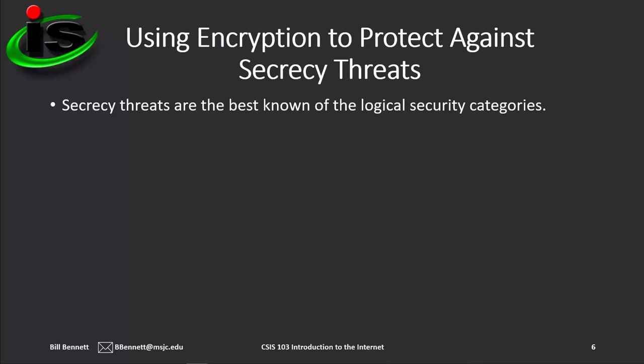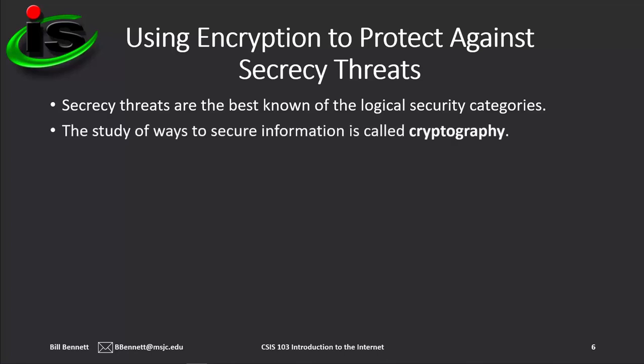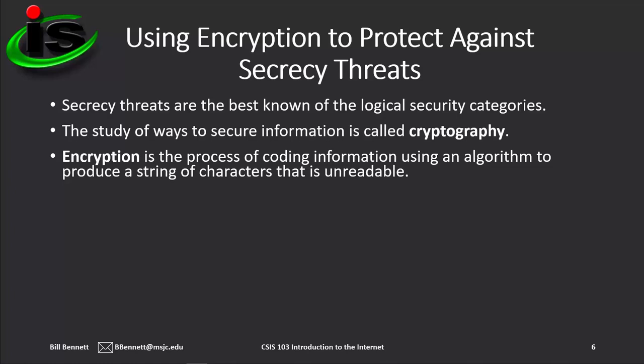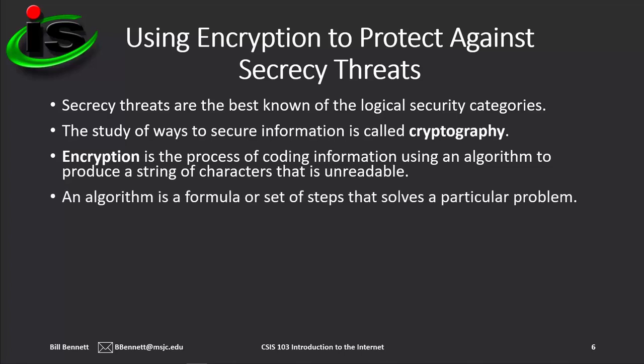Secrecy threats are the best known of the logical security categories. Maintaining the secrecy of communication has been a challenge throughout history. To verify the contents of a private message, the recipient needs proof that it was not altered or intercepted during transit. The sender needs proof that the message was delivered to the intended recipient. These standards apply to all forms of messages, including those exchanged on paper, in electronic communications such as email messages, or by a web server. The study of ways to secure information is called cryptography. Encryption is the process of coding information using an algorithm to produce a string of characters that is unreadable. An algorithm is a formula or set of steps that solves a particular problem.